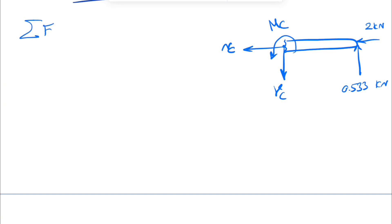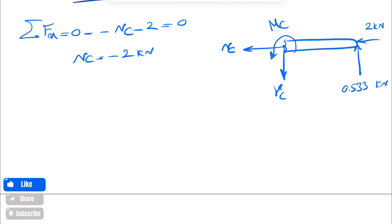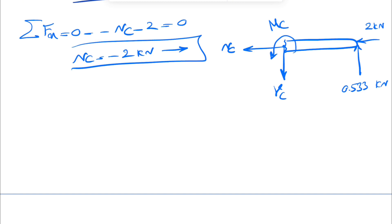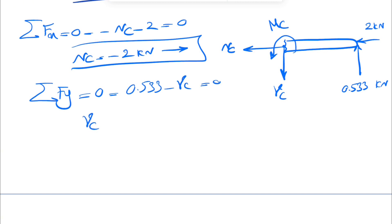Starting with ΣFx = 0: −NC − 2 kN = 0, so NC = −2 kN. The negative sign shows that NC is actually directed to the right. Then ΣFy = 0: 0.533 − VC = 0, so our shear force VC = 0.533 kN. No negative sign, which shows that VC is directed downward.